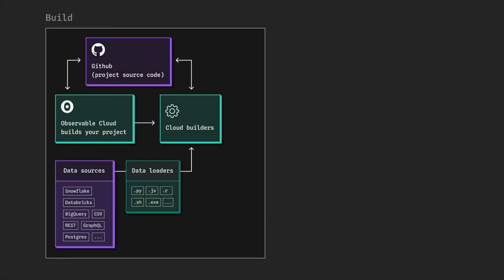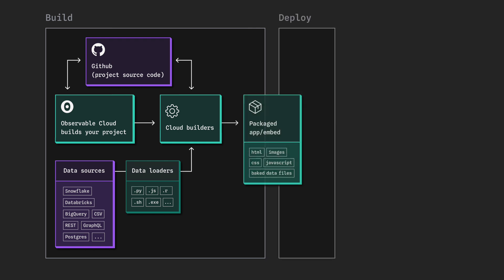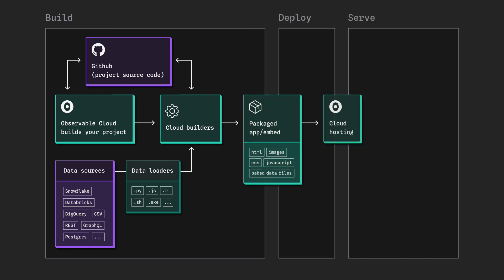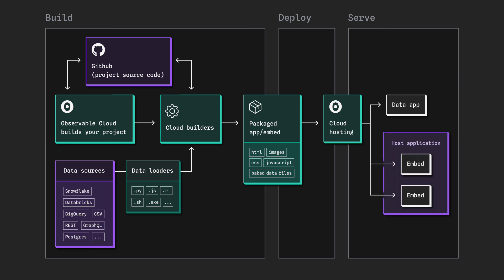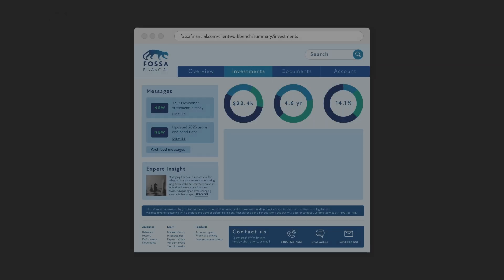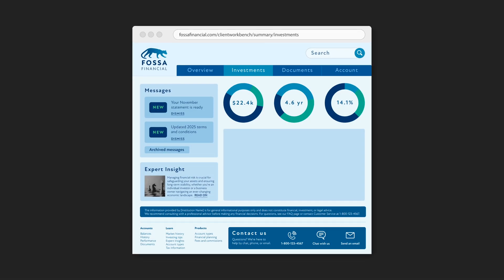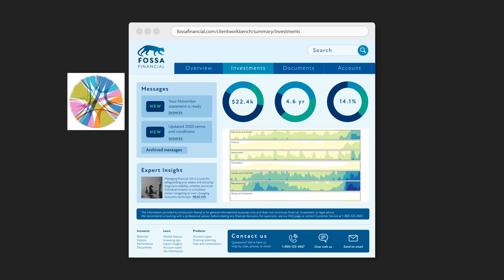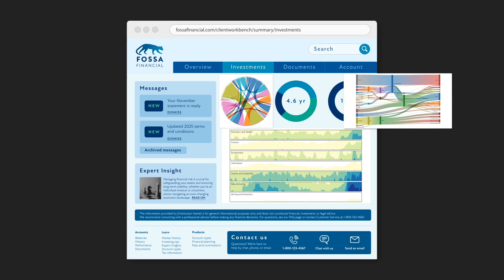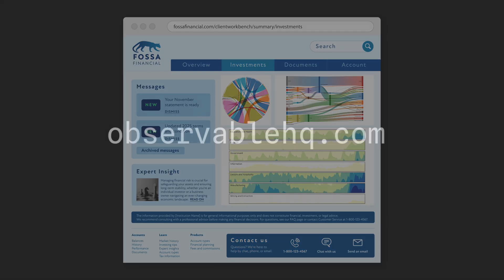Designed for speed, security, and flexibility, Observable accelerates your time to market by enabling data teams to create, update, and deploy visualizations independently. Observable embedding is built on web standards and powered by Observable's lightning-fast baked data architecture. It allows you to build components that load instantly without having to replace your entire BI tool or web app. Get started today!